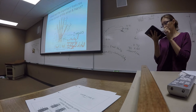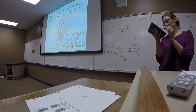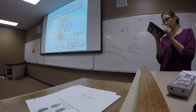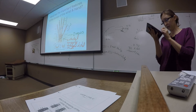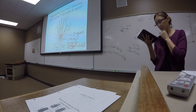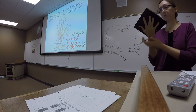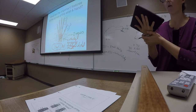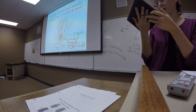The carpal bones are arranged in an arch — the carpal arch — and this is going to be the posterior wall of our carpal tunnel.